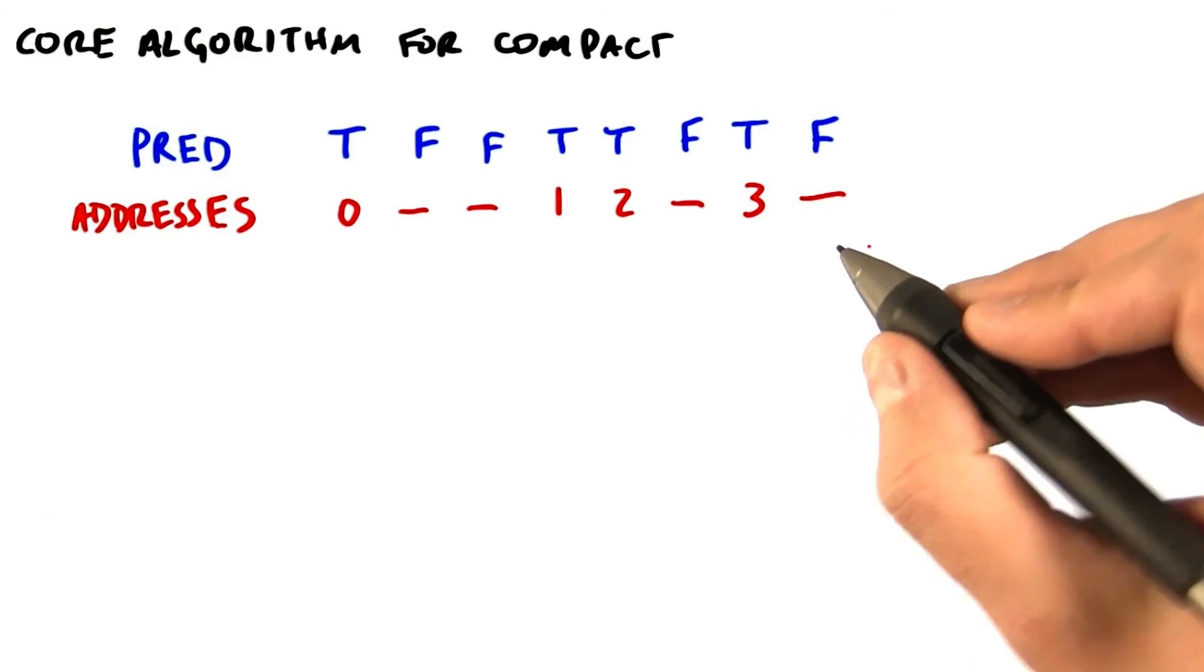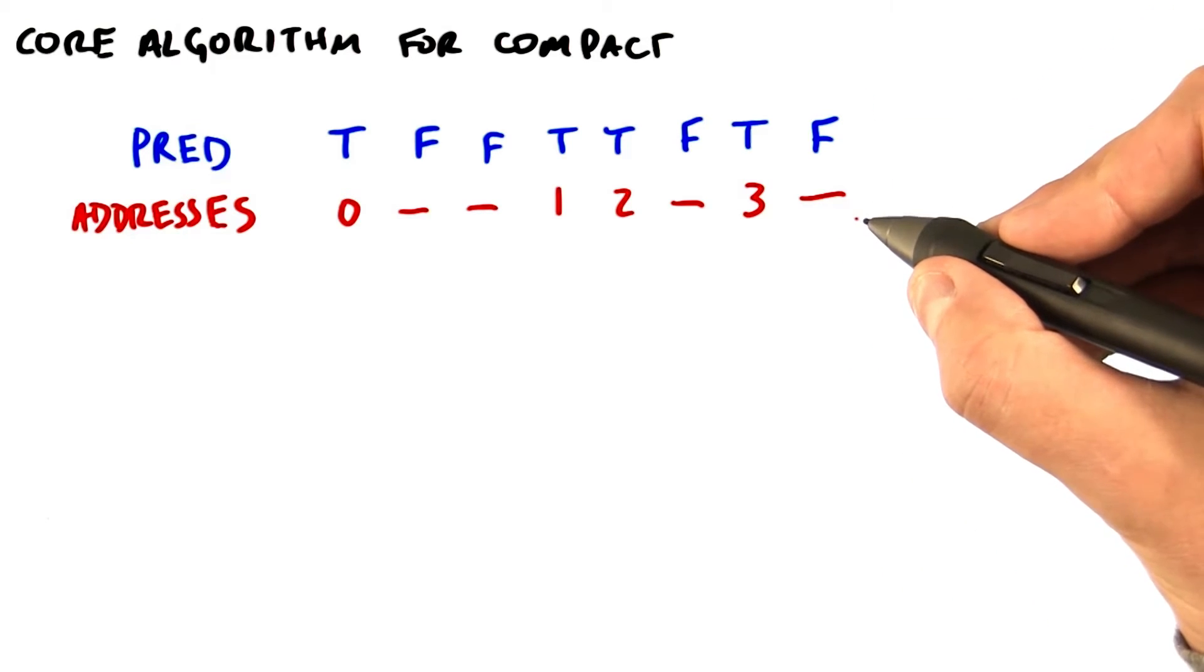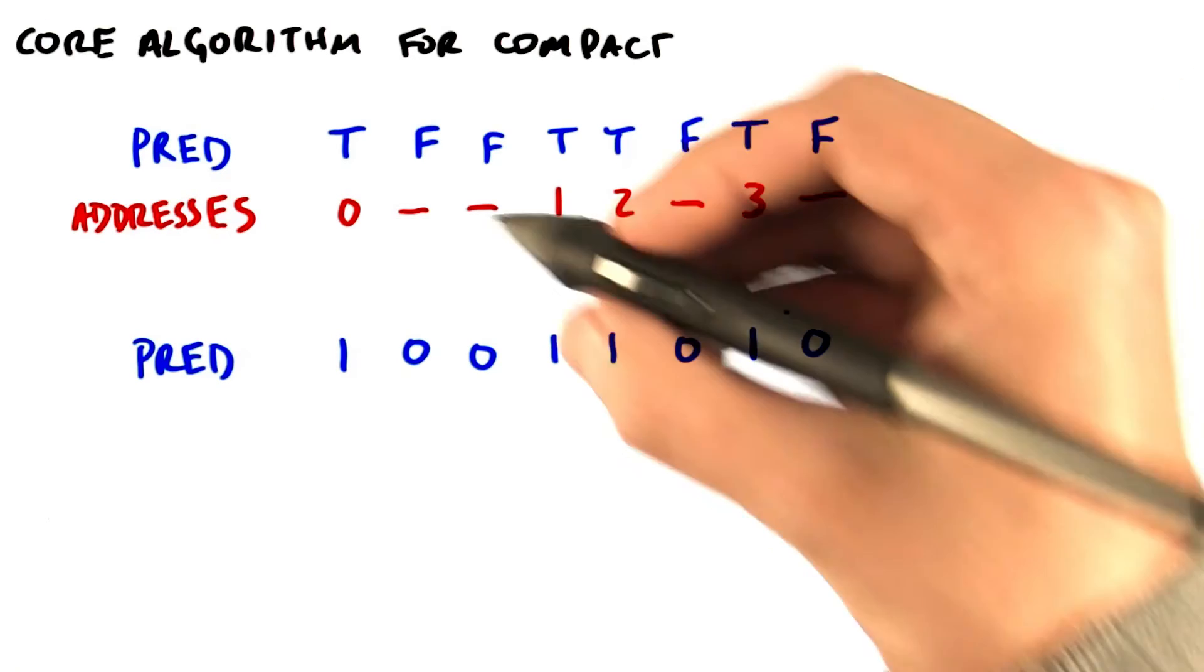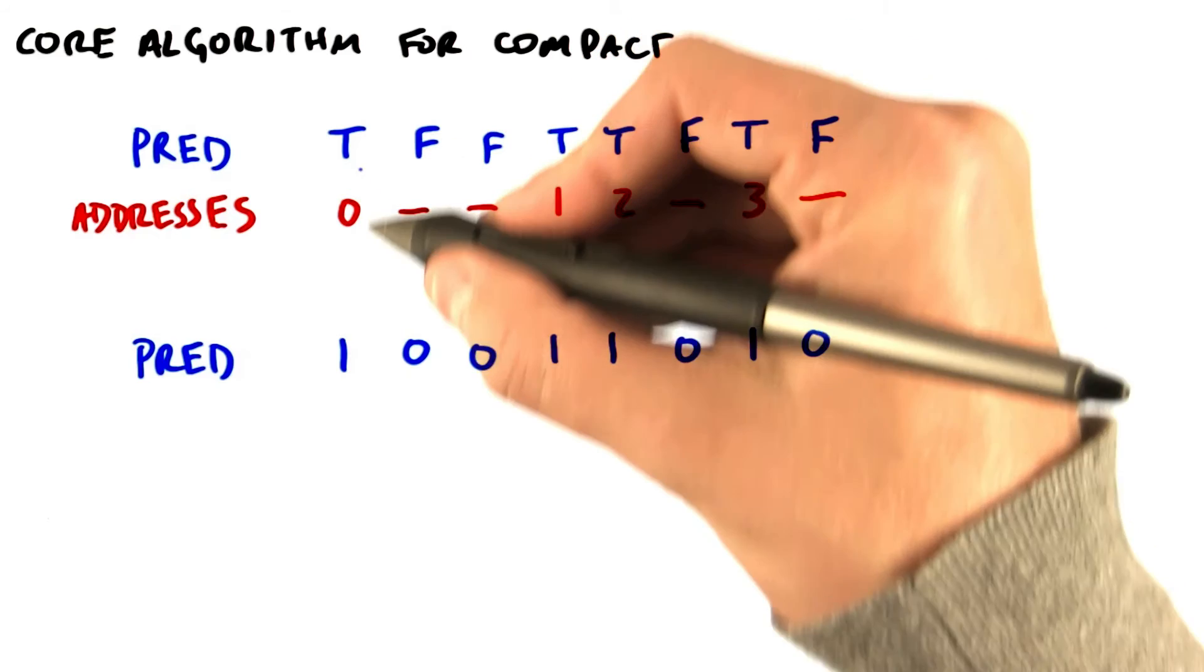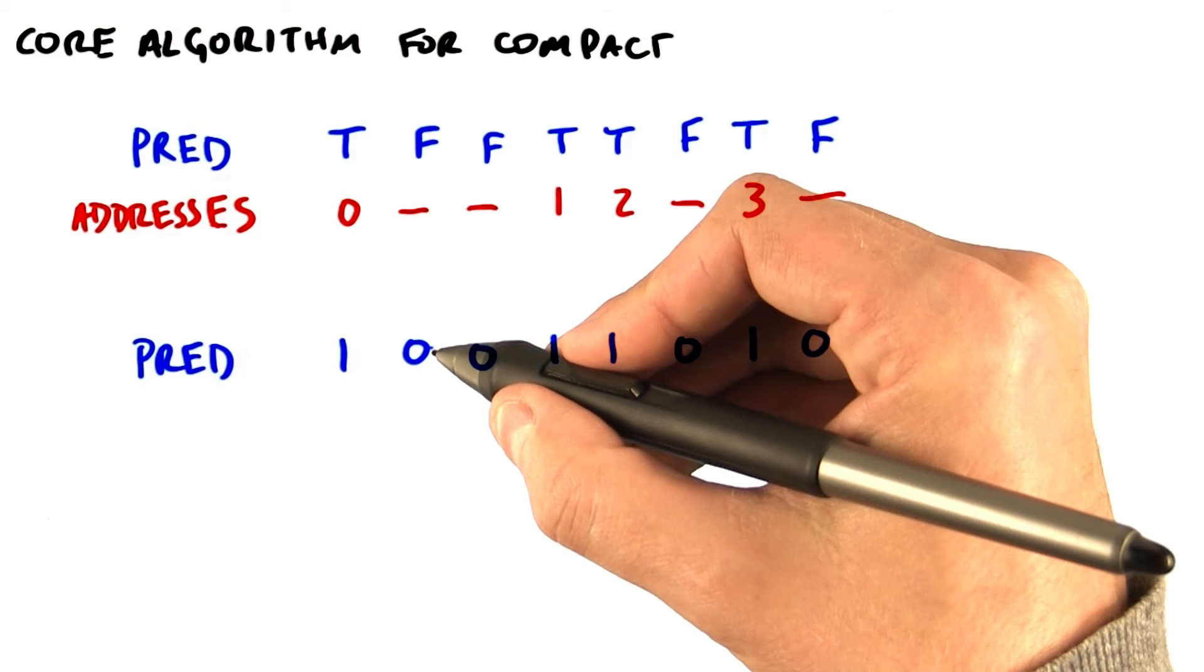Again, our goal is to input this predicate string and output this string of addresses. And now we'll do a simple substitution. Whenever we see a true here, we'll substitute the number 1. Whenever we see a false here, we'll substitute the number 0.